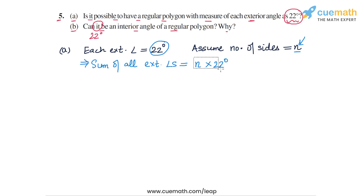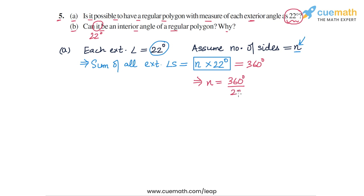This sum should be equal to 360 degrees. So N = 360 degrees divided by 22 degrees. If we carry out this division, we find that the result is not an integer, so we don't get a valid integer value for N.